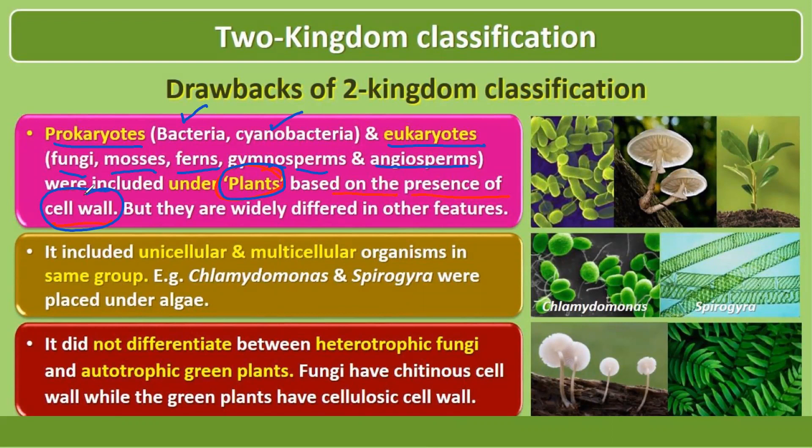The second drawback is that it included unicellular and multicellular organisms in the same group. For example, Chlamydomonas and Spirogyra were both kept under algae, which was a major concern and drawback of two-kingdom classification.